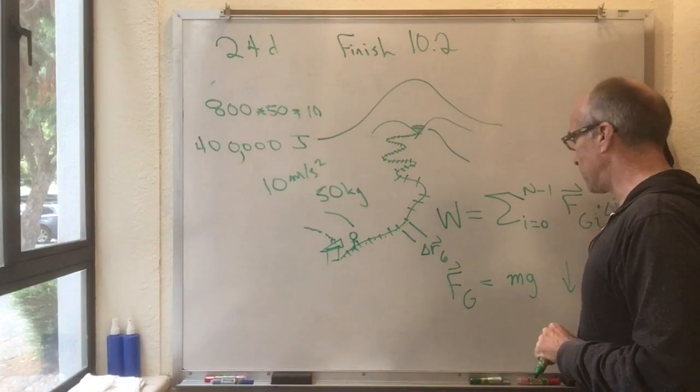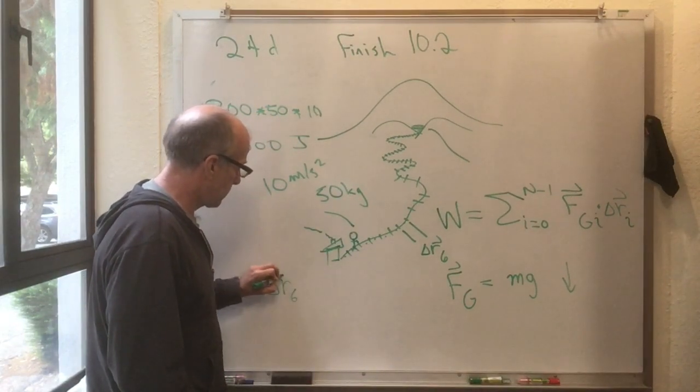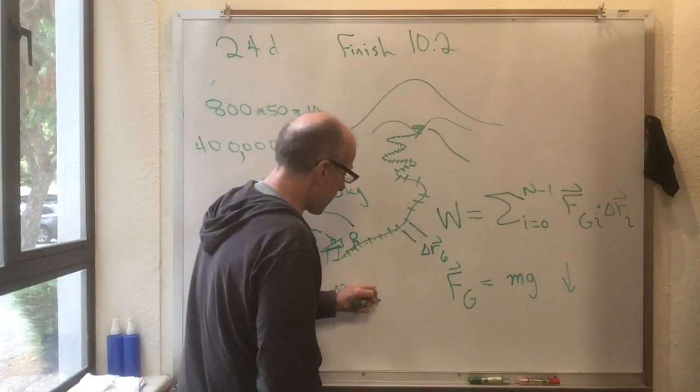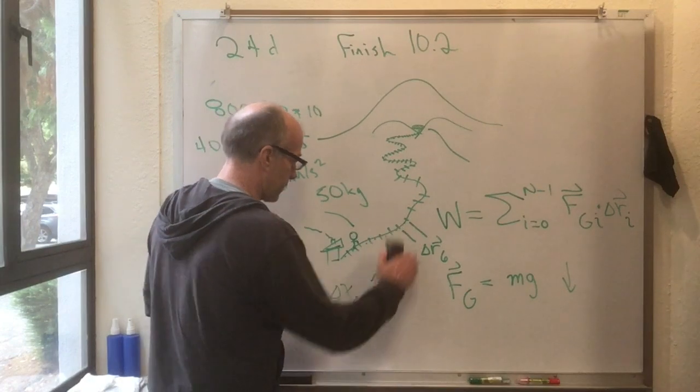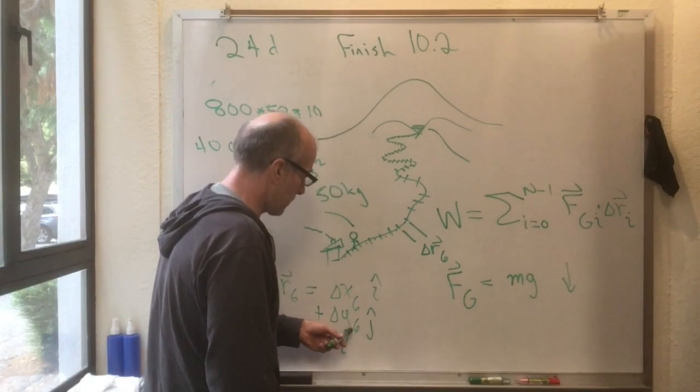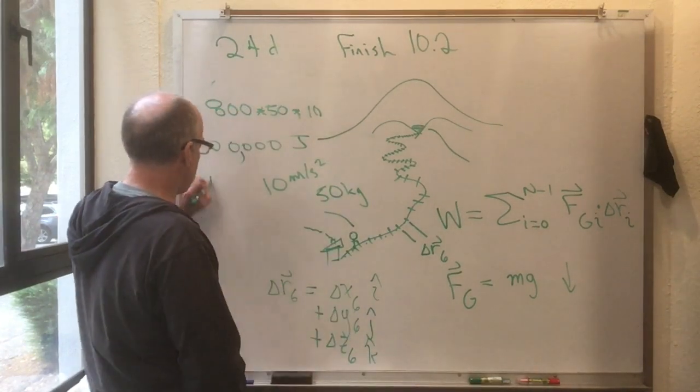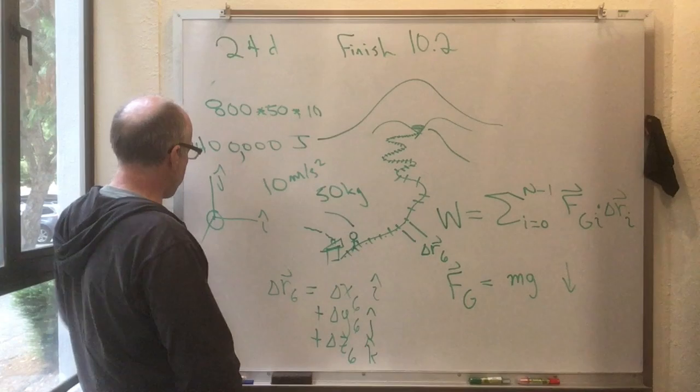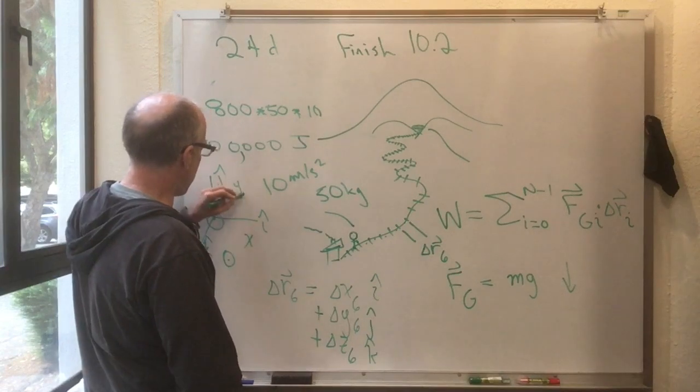Now we can write delta r sub 6 a little bit more fancily. Delta r sub 6 is however much I moved in the x direction in the sixth time segment times the unit vector in the x direction, plus however much I moved in the y direction on displacement 6 times the unit vector in the j direction, plus however much I moved in the z direction times k hat. And here my coordinate system is i to the right, j up, and k is coming out of the board at you, which we could draw with a dot like that. This is your x, y, and z directions.